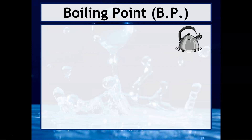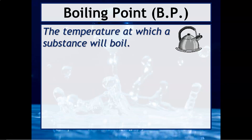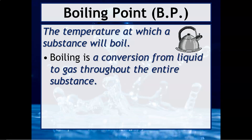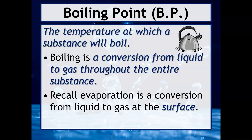Let's talk about how vapor pressure relates to boiling point. The boiling point is the temperature at which a substance will boil. Boiling is a conversion from a liquid to a gas throughout the entire substance. You can differentiate boiling from evaporation because in evaporation you do not see any bubbles — evaporation is a conversion of liquid to gas specifically at the surface. When you're boiling something, you'll see bubbles throughout the entire substance.